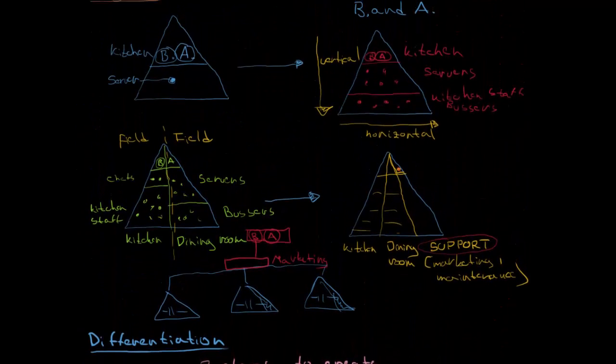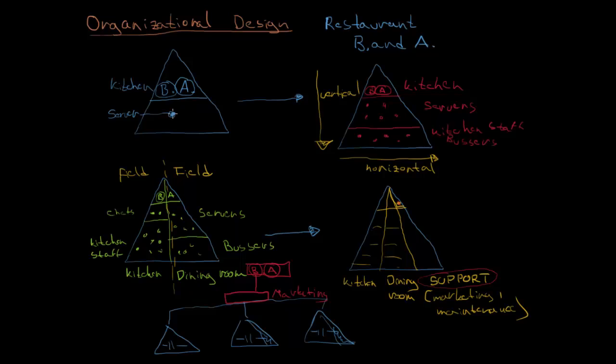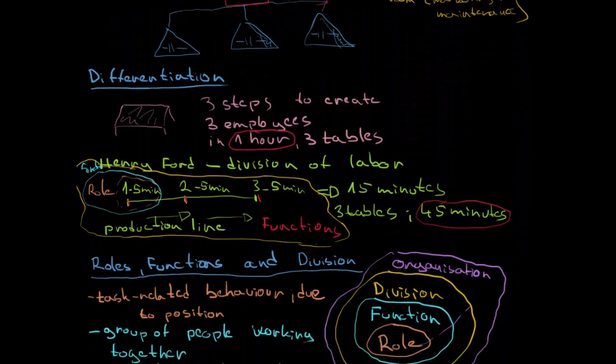So let's get back a little bit to our previous drawing which was about the restaurant. So here you see some role, this was the role. Then we have created some functions, so this is the function of servers we can say. And then we have created some divisions, so you have a division for kitchen and division for dining room. So you have seen how there is a logic flow, the differentiation of labor and how it is growing to more general terms.